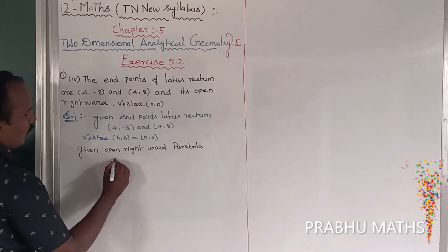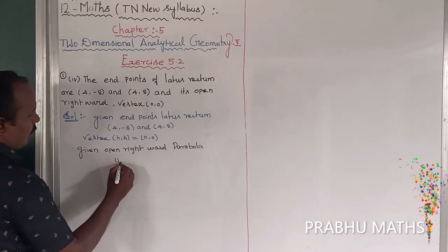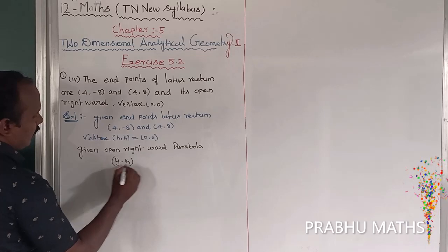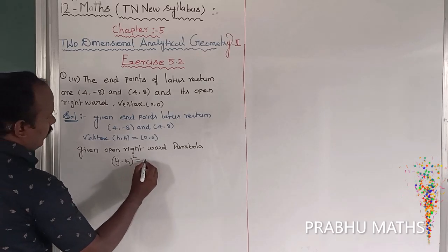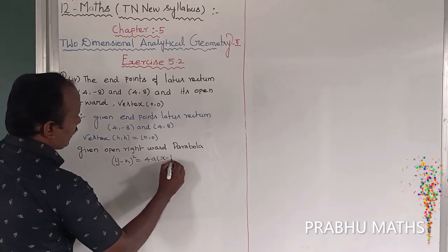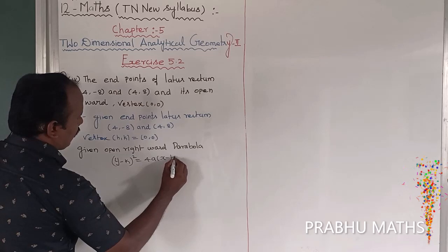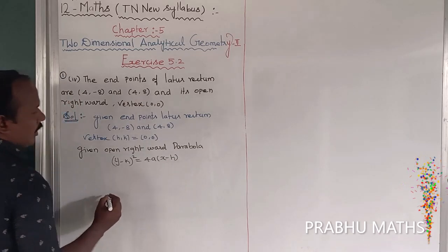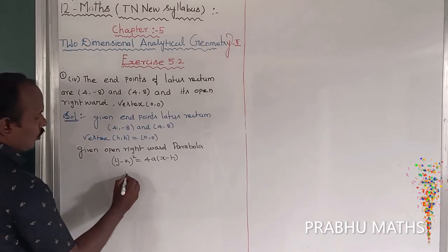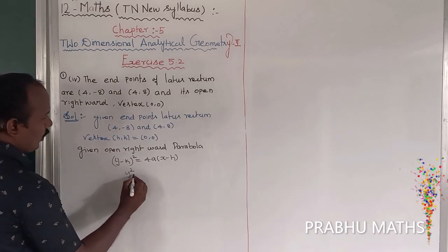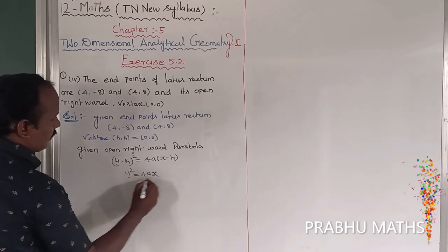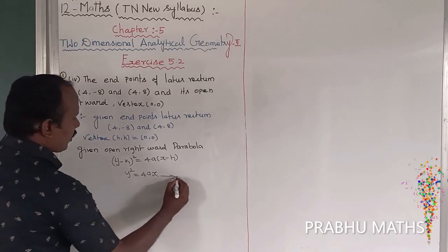So with (h, k) = (0, 0), the equation becomes y² = 4ax. This is equation number 1.